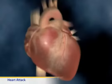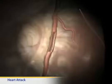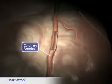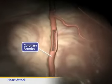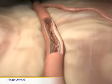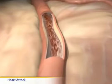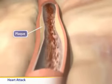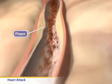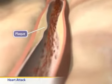A heart attack, also known as myocardial infarction, or MI, occurs when blood flow to a part of the heart is blocked. Coronary arteries, the blood vessels that supply oxygen and nutrients to the heart muscle, may become narrowed by the buildup of plaque, a disease process called coronary artery disease.